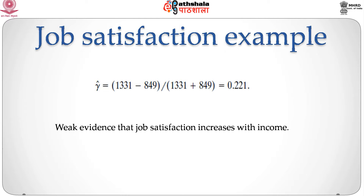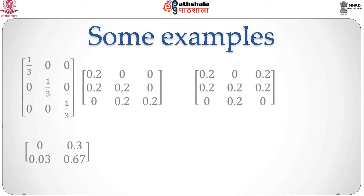For the job satisfaction example, we calculated the number of concordances as 1,331 and discordances as 849. The sample gamma is (1331 − 849) / (1331 + 849) = 0.221. We can conclude that there is some weak evidence that job satisfaction increases with income. It would be instructive to calculate the gamma measure for four probability distributions: gamma equals 1 for the first two examples, 0 for the third, and −1 for the fourth.